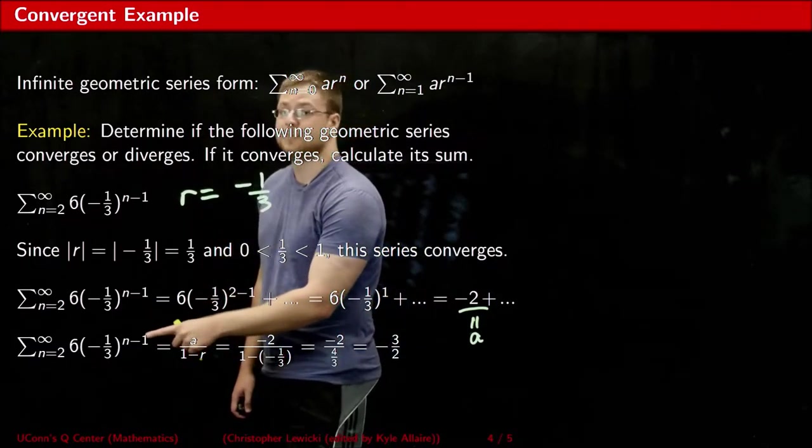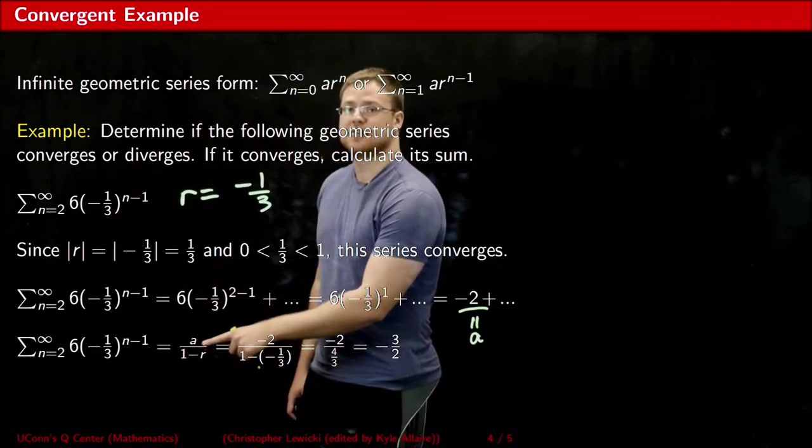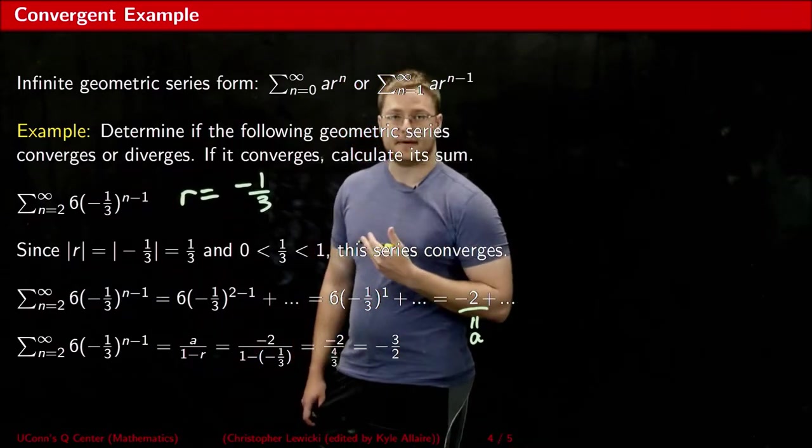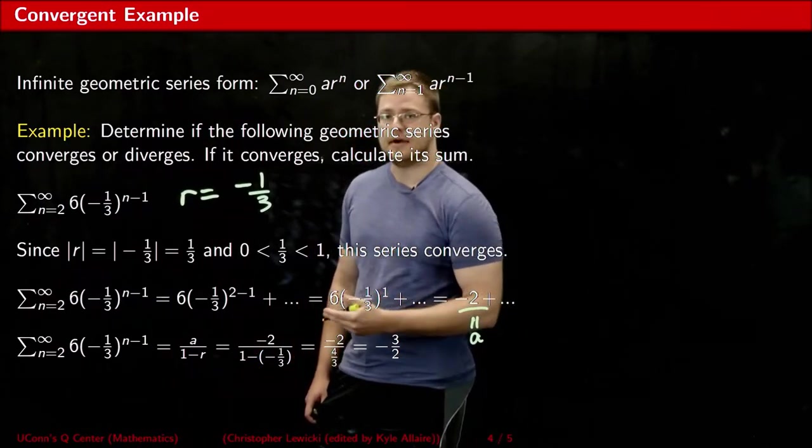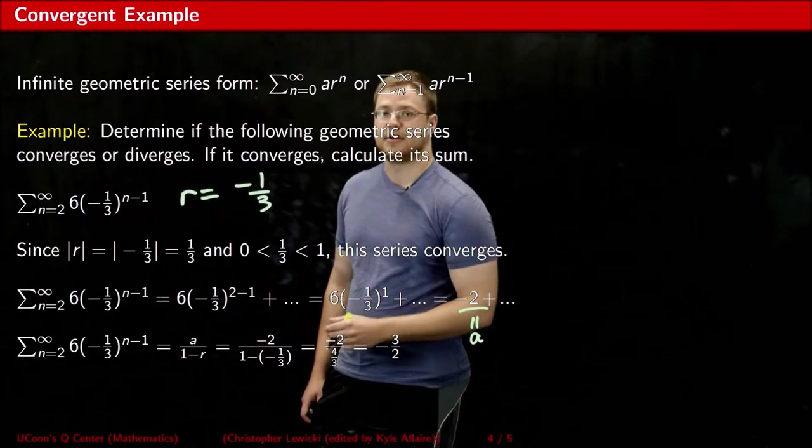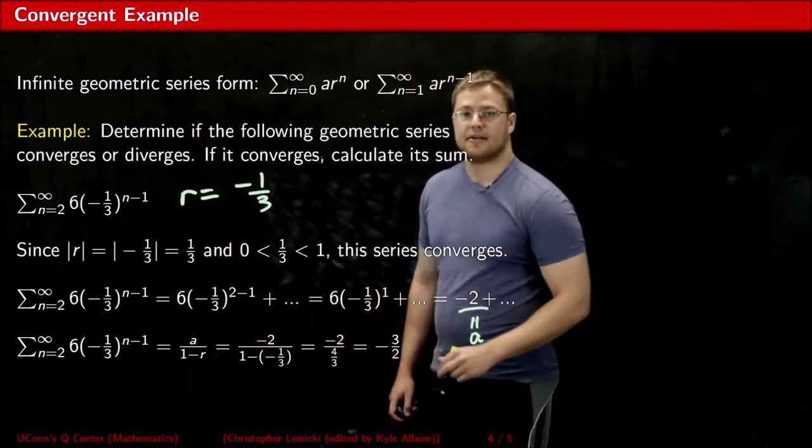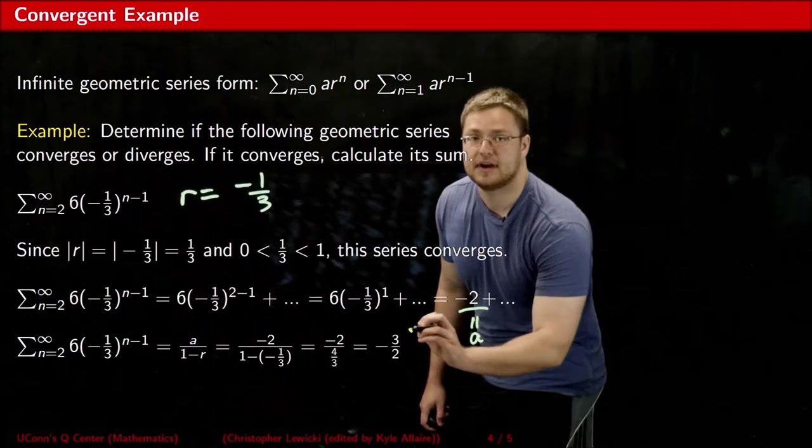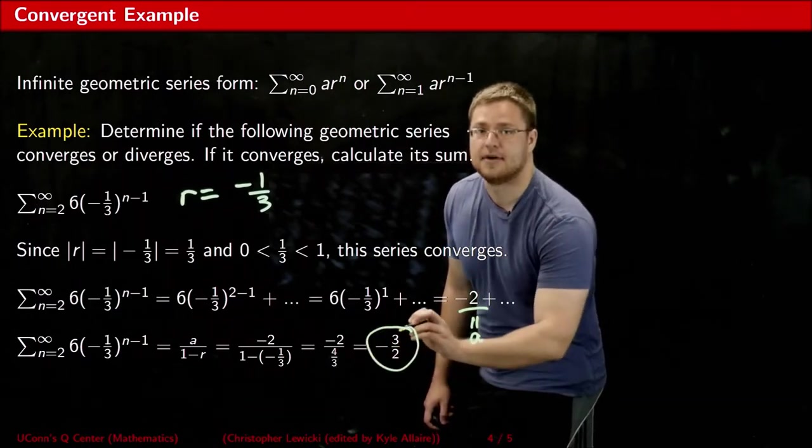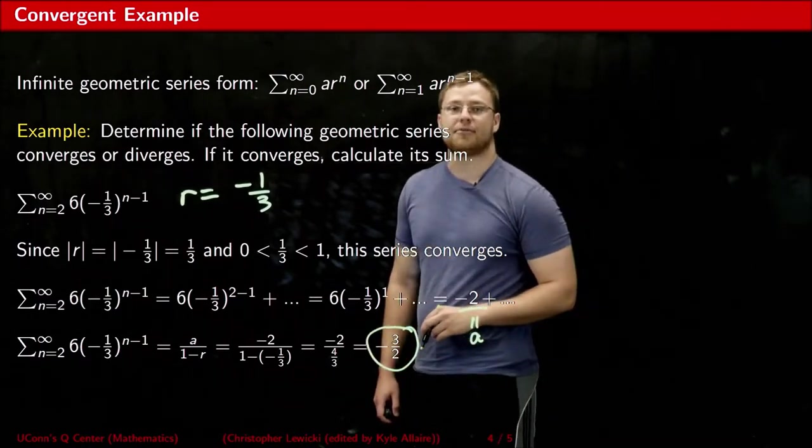This series, because it's convergent, is equal to this simple formula. Our a value is negative 2, and our r value is negative 1 over 3. I substitute those values in, simplify my work, and what I get is that the infinite sum of this series is negative 3 over 2.